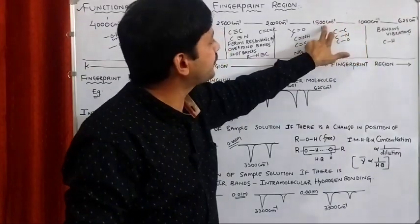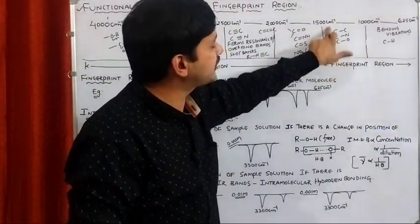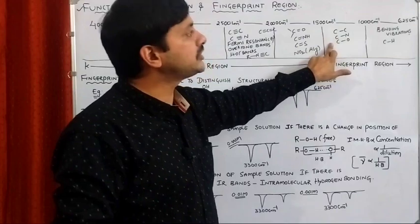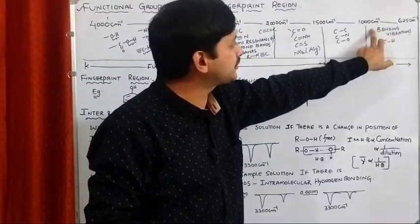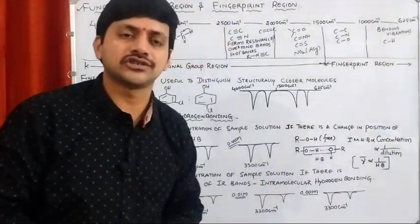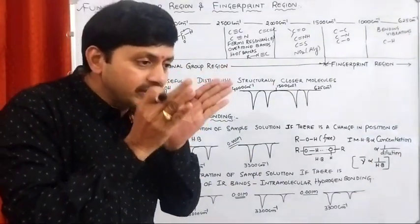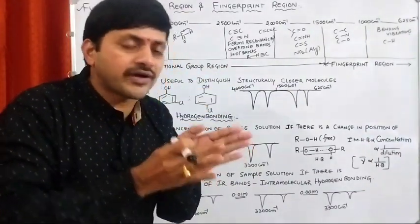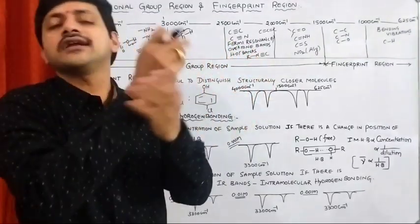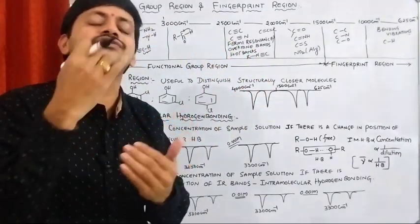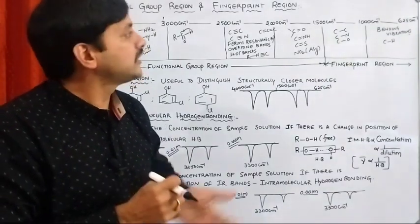If you observe 1000 to 1500 cm⁻¹, we are having the vibrations or frequencies of various bonds. Less than 1000 cm⁻¹, we are always observing bending vibrations of CH bonds. So in between 625 to 4000 cm⁻¹, we are observing different kinds of vibrations due to which we are having different kinds of frequencies.